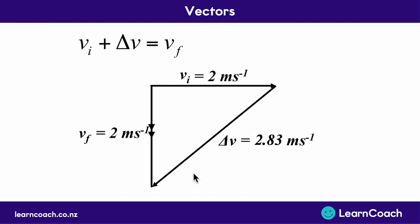We can add or subtract vectors together — like we added the initial velocity and the change in velocity. When adding or subtracting vectors, we add them head to tail. We put the head of the first arrow at the start, then add the next arrow's tail to that head and carry on. However, if it equals something — for example, the final velocity — we go from the very start of the first arrow to the very end of the last arrow, and that's where we get our resultant vector from.